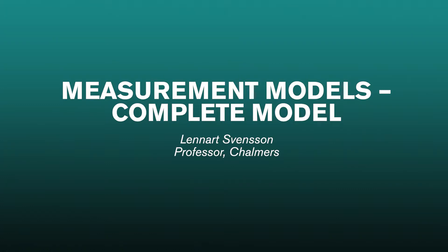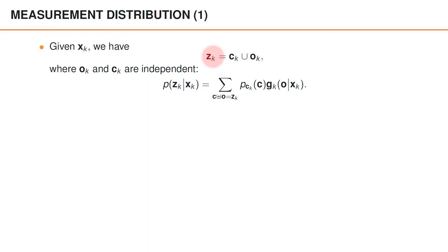At time k, we observe a set of measurements that contains all the clutter and object measurements that we receive at that time. The object measurements and the clutter measurements are assumed independent, and given xk, the distribution of zk is therefore given by the convolution formula.